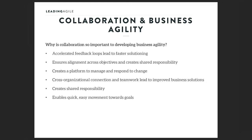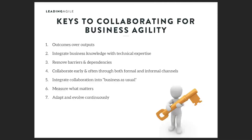A few keys to collaborating for business agility: outcomes over outputs; integrate business knowledge with technical expertise; remove barriers and dependencies wherever possible; collaborate early and often through both formal and informal channels; integrate collaboration into your business as usual. Talk with managers and organizational leaders about how collaboration changes your role, responsibilities, and time allocation. Measure what matters — create metrics and measurements to hold each other accountable and stay on the same page. And most importantly, adapt and evolve continuously. With that, we'll hand it over to Jim, who will take us through business agility in the larger organization.